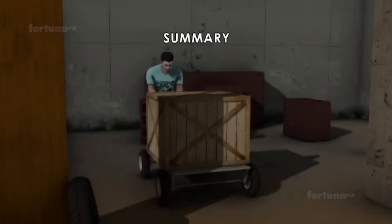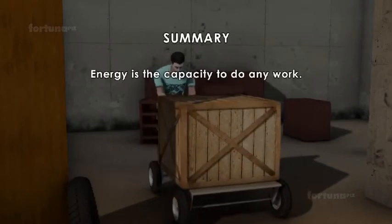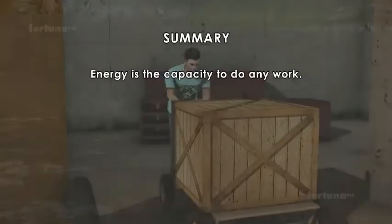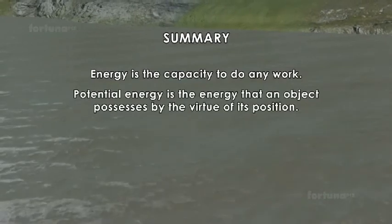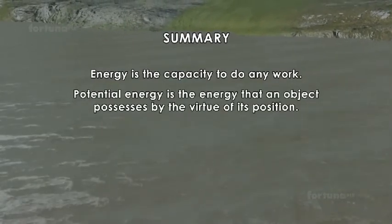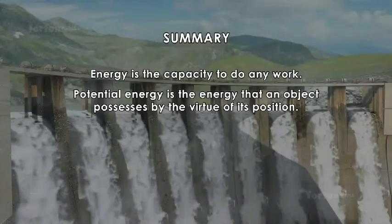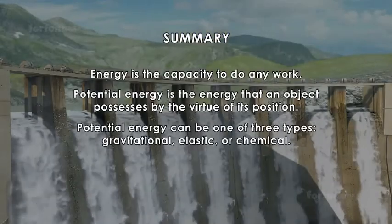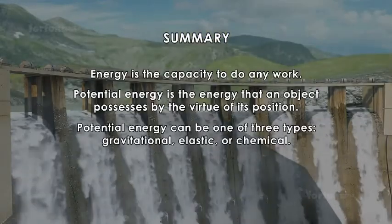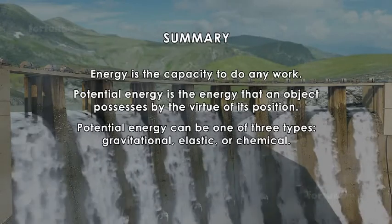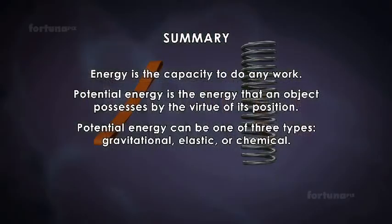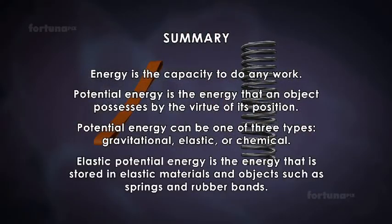Summary: Energy is the capacity to do any work. Potential energy is the energy that an object possesses by virtue of its position, and it can be one of three types: Gravitational, Elastic, or Chemical. Elastic potential energy is the energy that is stored in elastic materials and objects such as springs and rubber bands.